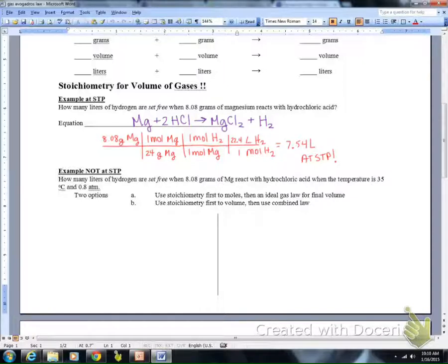Now an example not at STP. How many liters of hydrogen are set free when 8.08 grams of magnesium react with hydrochloric acid when the temperature is 35 degrees Celsius and you're at 0.8 atmospheres? We have two options, so I'm going to show you both.